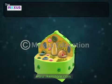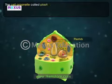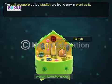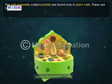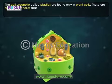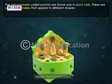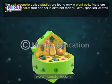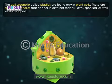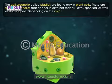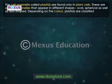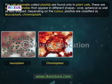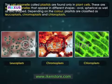The cell organelle called plastids are found only in plant cells. These are special organelles that appear in different shapes — oval, spherical, as well as disc-shaped. Depending on the color, plastids are classified as leucoplasts, chromoplasts, and chloroplasts.